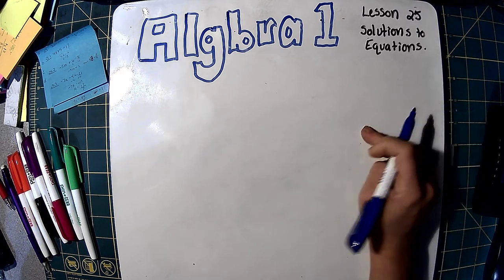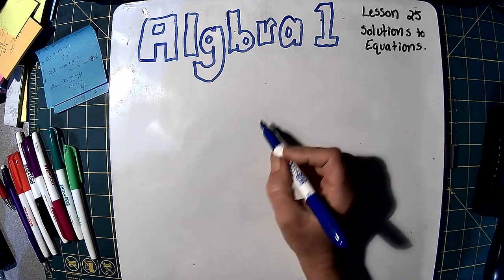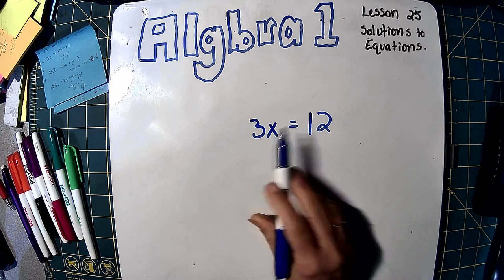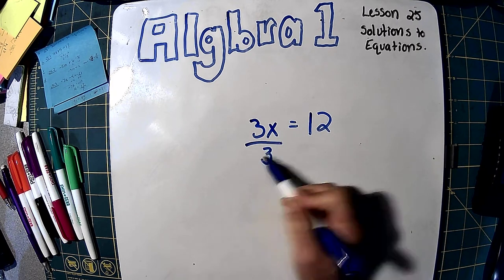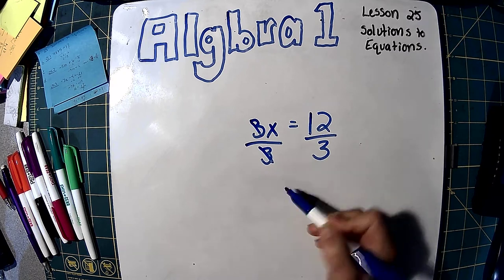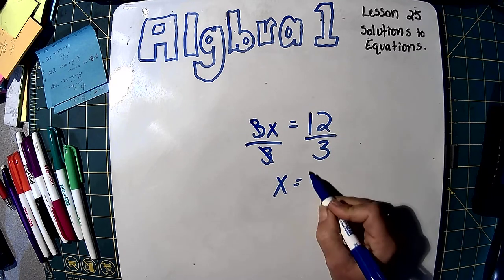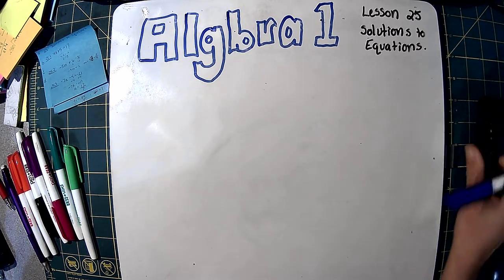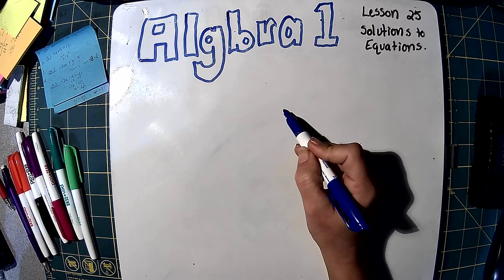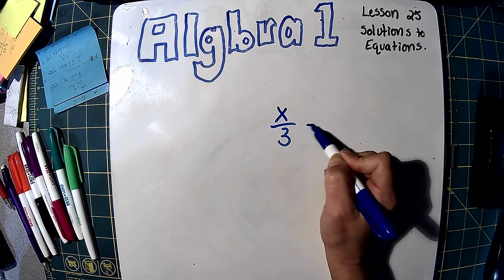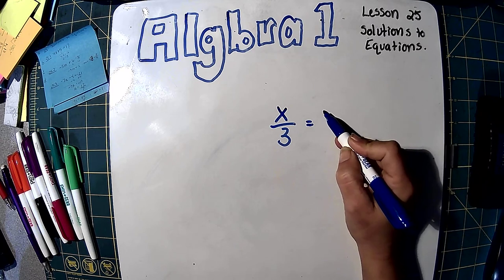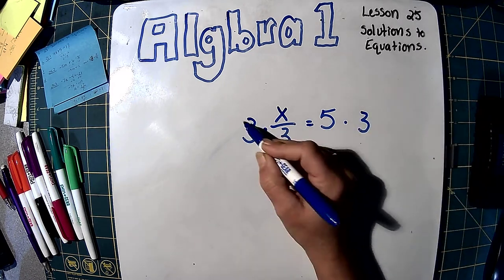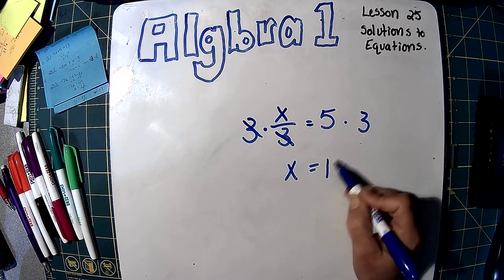Last Wednesday, we went over how to get rid of multiplication and division. So if we had 3x equals 12, this means 3 times x. So we're going to do the opposite of that — we're going to divide by 3. Those cancel. And if you had division, let's say you had x divided by 3 equals 5. We would say times 3 on both sides, and we're going to get x equals 15.